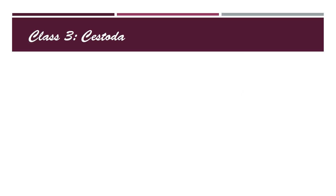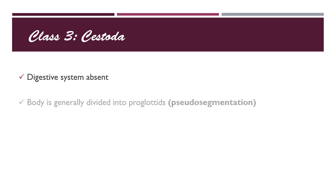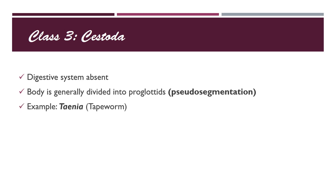Class 3 is Cestoda. Organisms of this class lack a digestive system, as these organisms are endoparasites of the small intestine and they absorb digested food directly from their body surface. So these organisms do not require any digestive system. These organisms also have pseudo-segmentation. Tapeworms are the examples of this class.